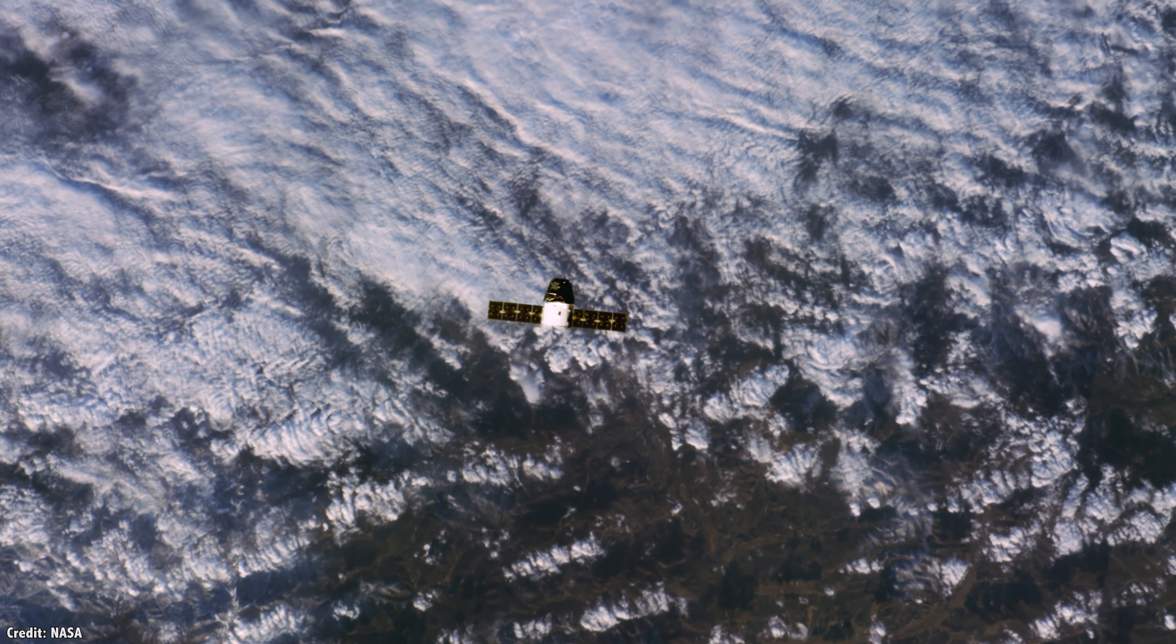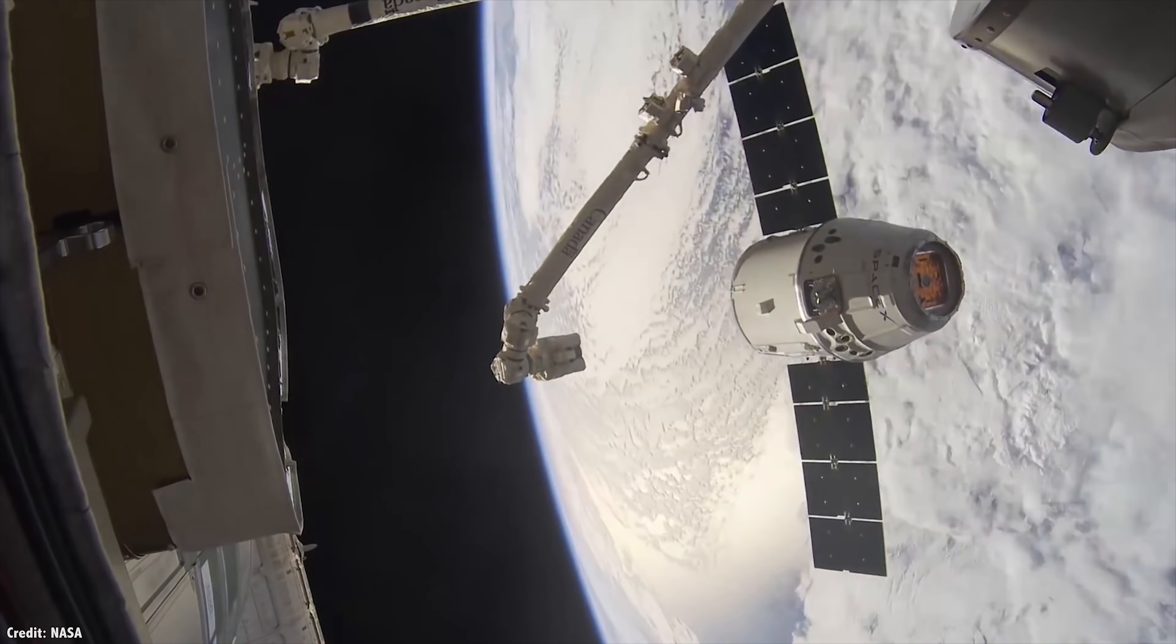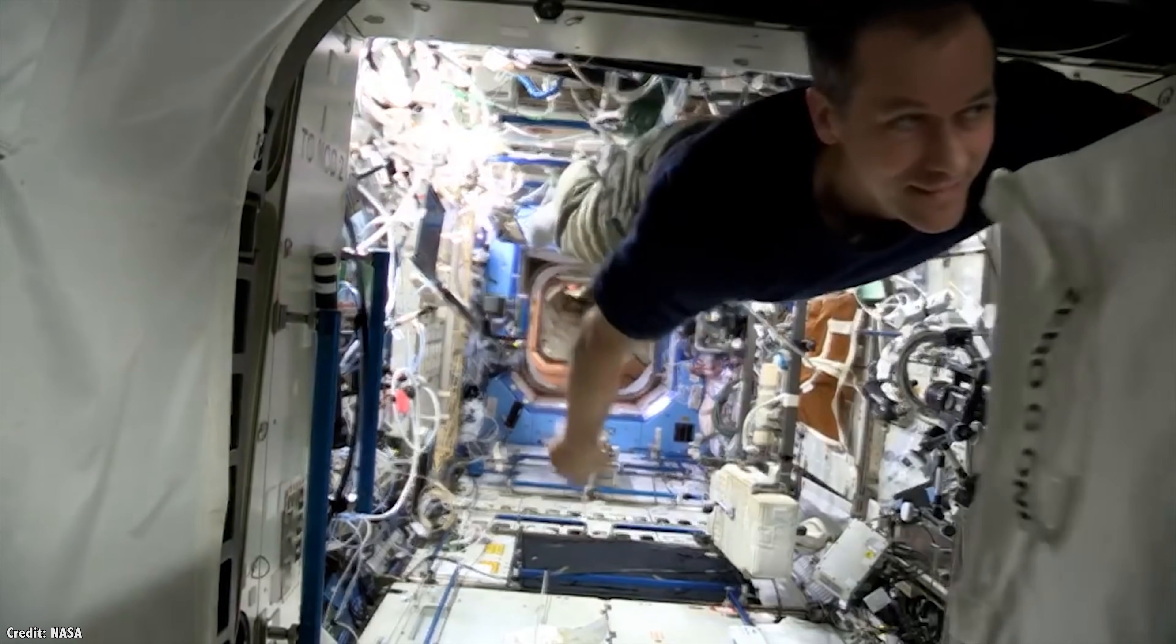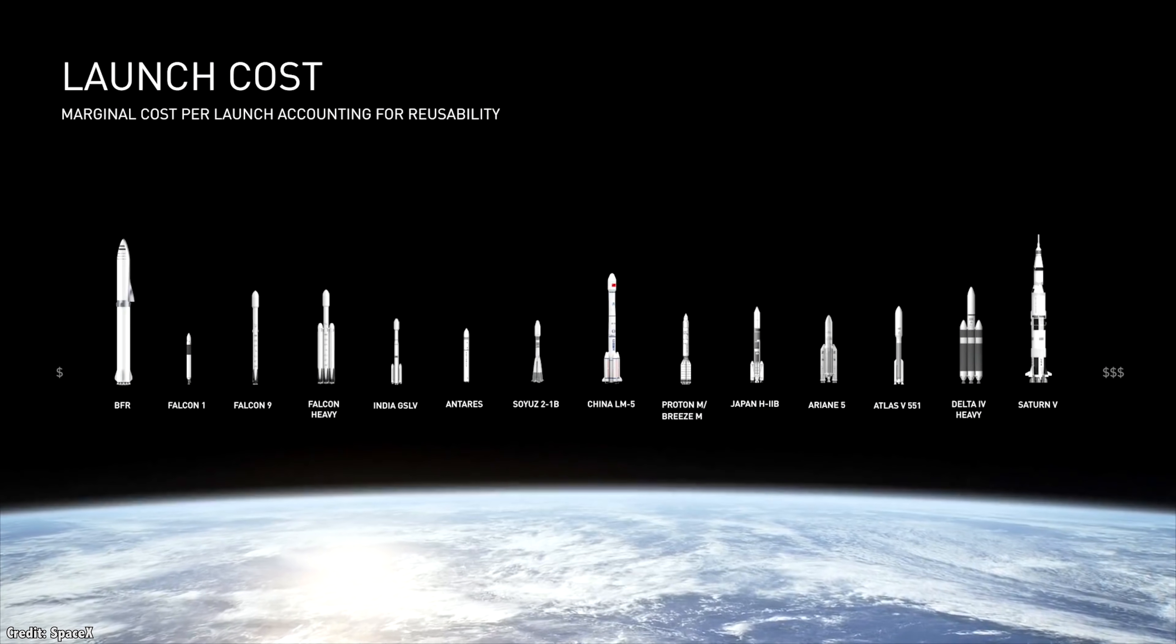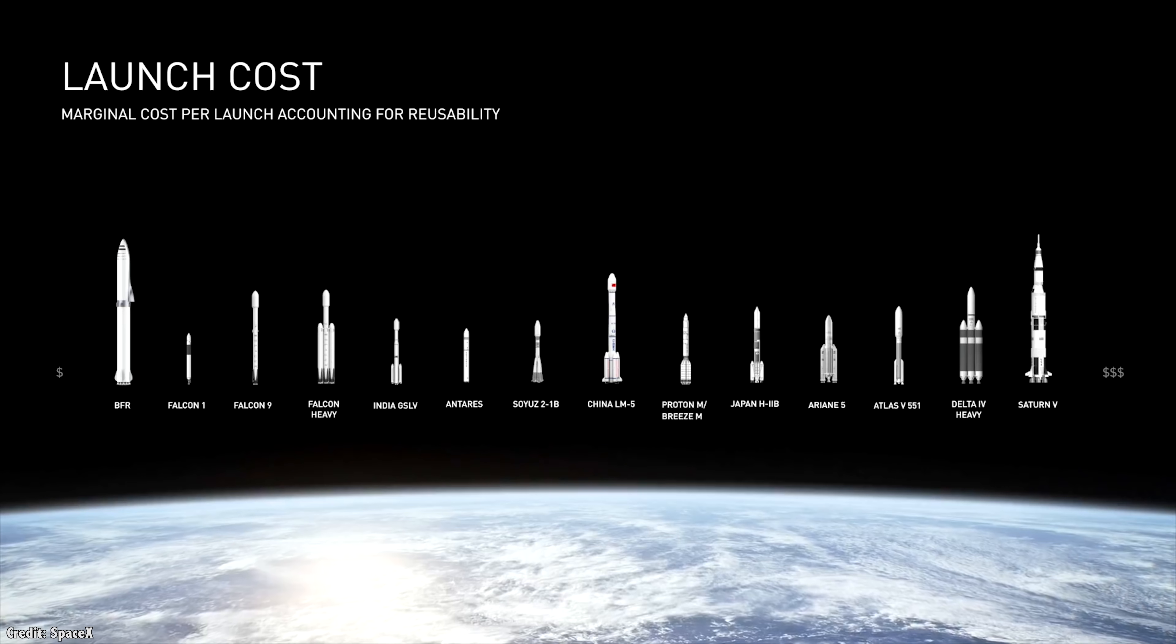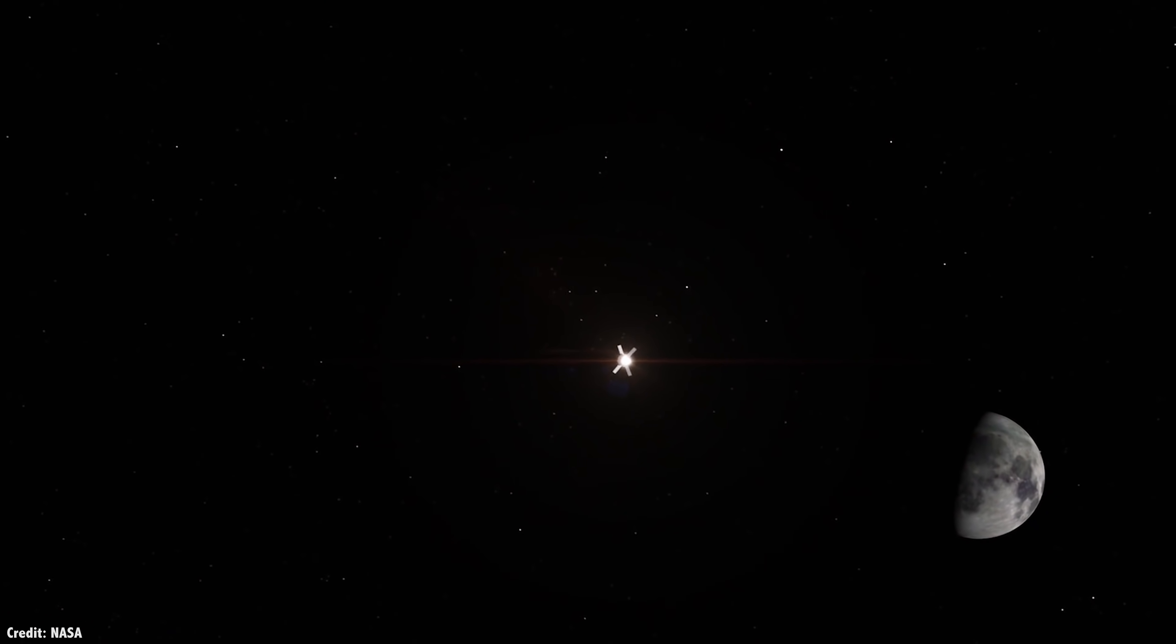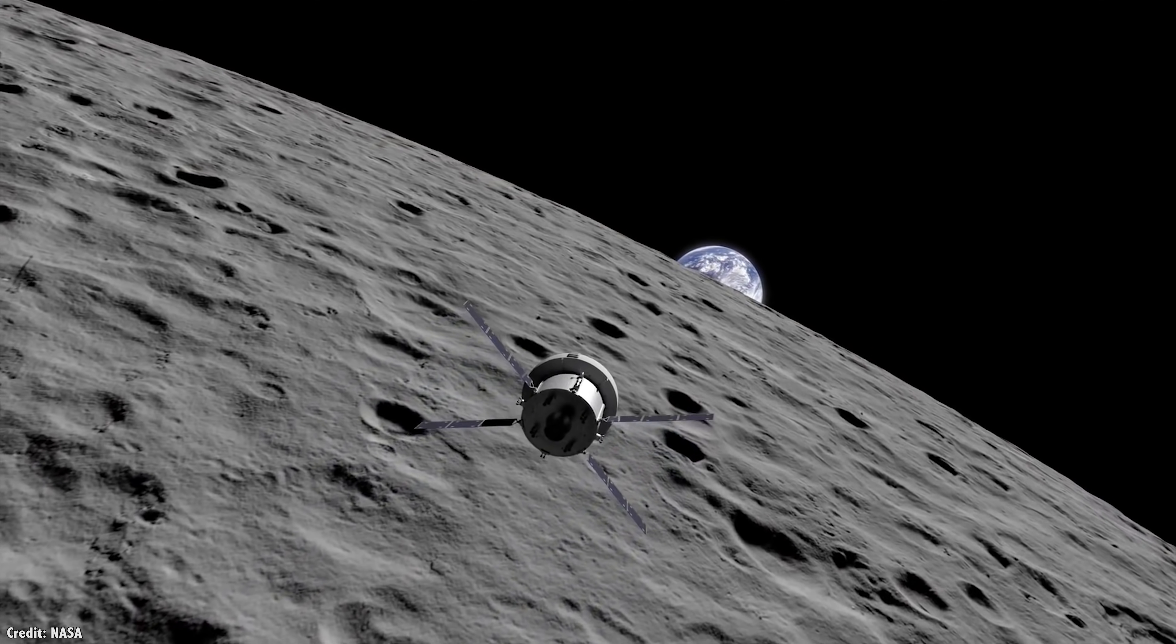In the past, space missions carried everything they needed from Earth to space: all the air, water and food the astronauts would need, as well as the propellant for their rockets. A Falcon 9 will cost you $5,000 per kilogram, and even a Falcon Heavy will still cost you $1,700 per kilogram. To send a kilogram to the Moon will probably cost you $50,000 to $100,000 per kilogram.